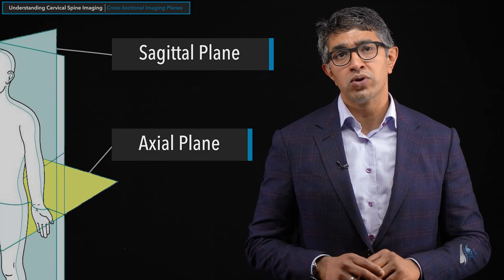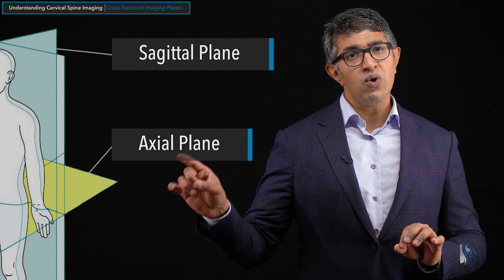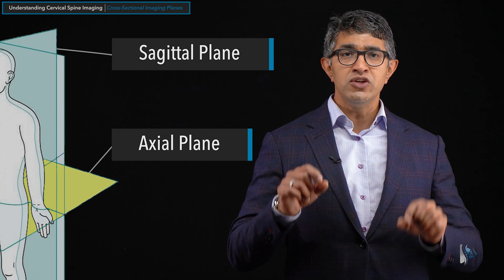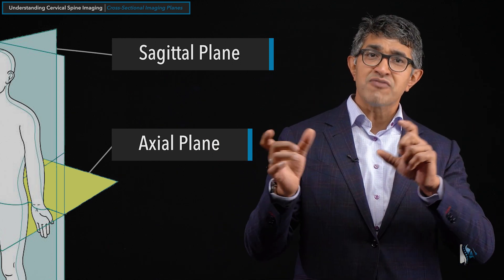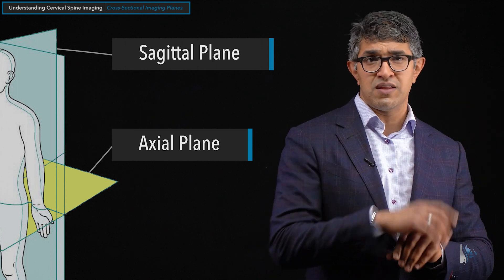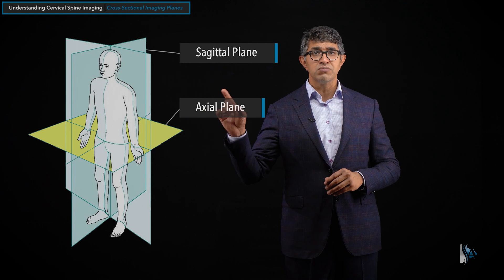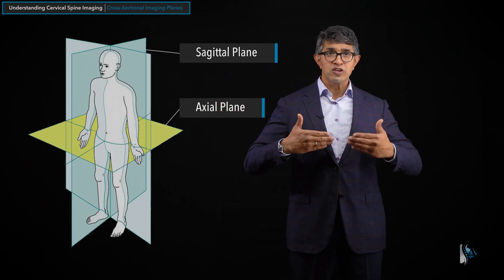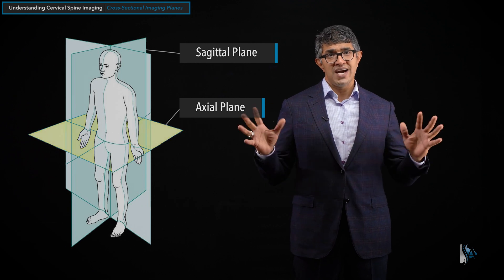The axial plane is very important to mention the convention. You have to imagine that the patient is lying flat on their back and you are at their feet looking up at slices of them. So the image becomes left-right reversed — what you're looking at on the right side of the screen will be the left side of the body and vice versa. That's the axial plane. Just imagine you are standing at the patient's feet, looking up at slices of them.